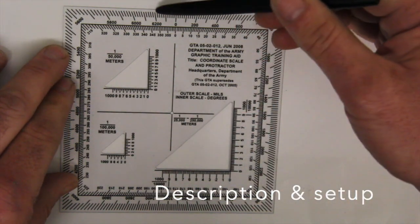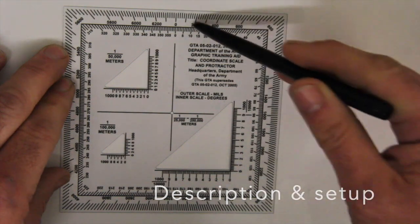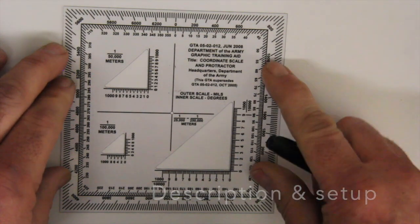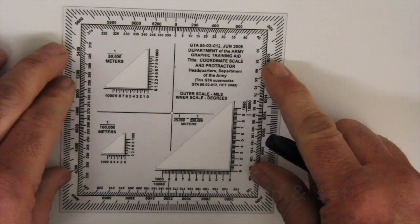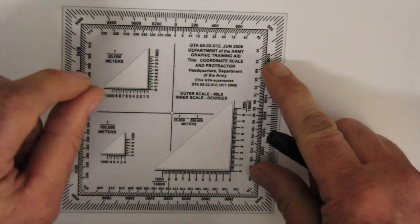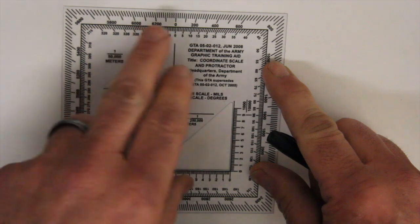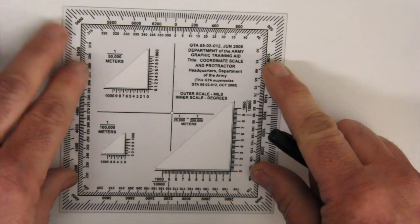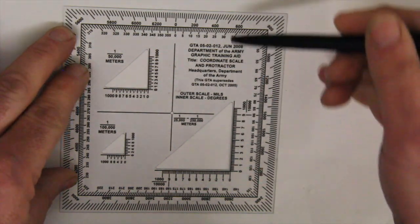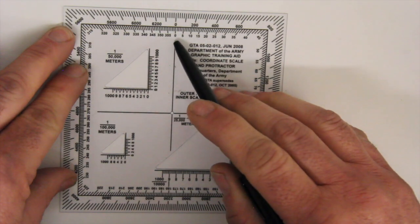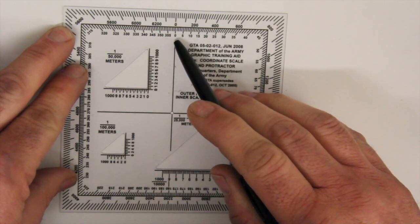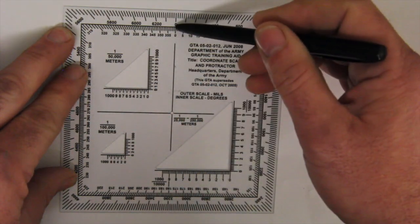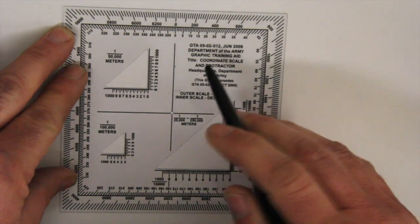On the outside of the protractor is a scale that reads in mils from zero all the way around to 6,400. For land navigation, we're not concerned about mils — they're used for precision shooting or directing indirect fire. The inner scale reads in degrees from zero to 360, and that's what we use for navigation.